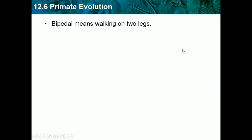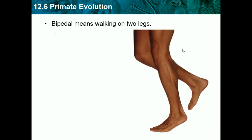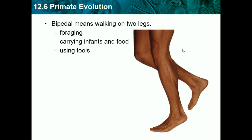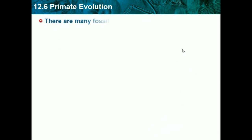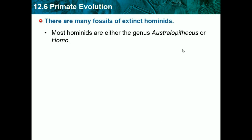Bipedal means walking on two legs, like us. It helps them forage, carry infants and food, and use tools, because our hands are free. Walking upright has important adaptive advantages, and there are many fossils of extinct hominids.